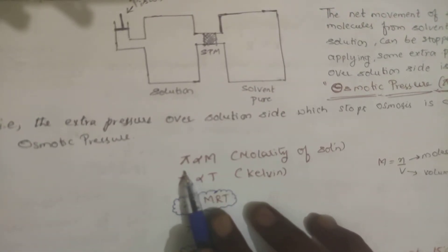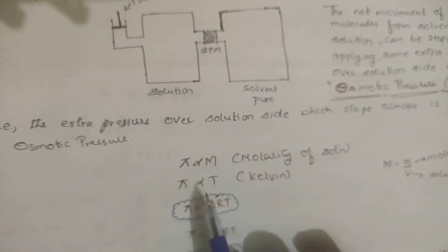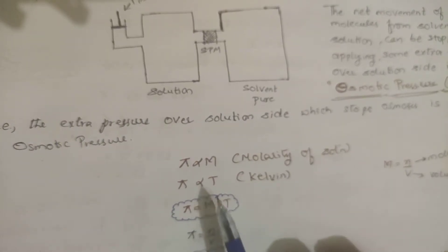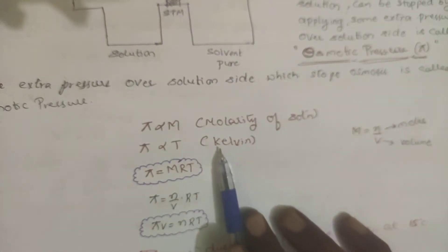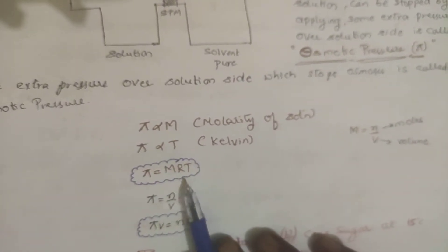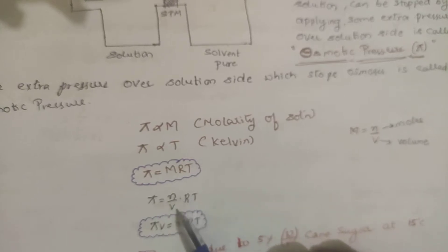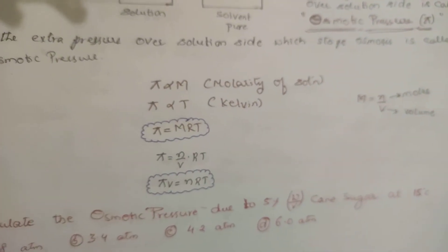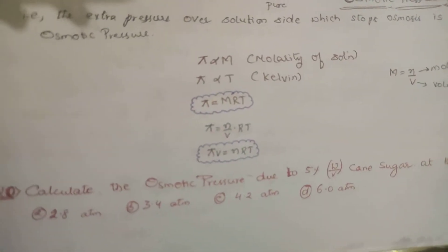Osmotic pressure is represented by π (pi). π is directly proportional to the concentration of the solution (molarity, M) and directly proportional to temperature T (in Kelvin). So π ∝ M × T, removing the proportionality gives π = MRT. Since concentration is number of moles per volume (n/V), substituting gives πV = nRT — the same form as the ideal gas equation.